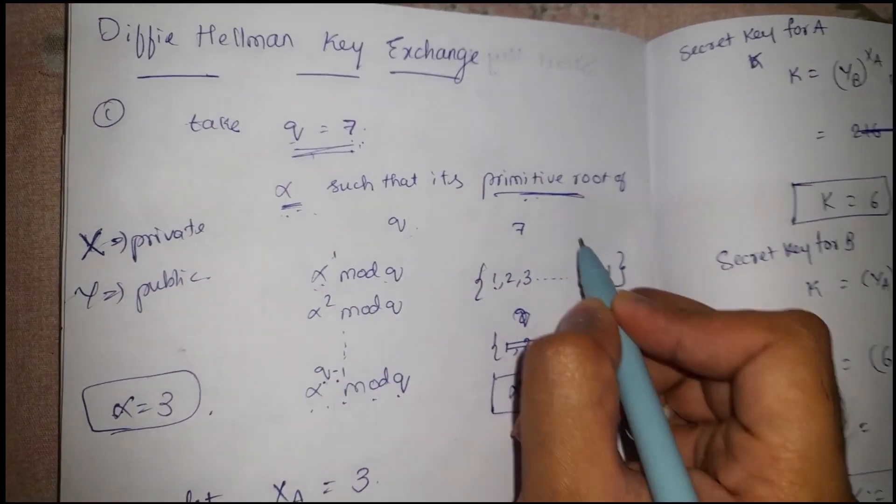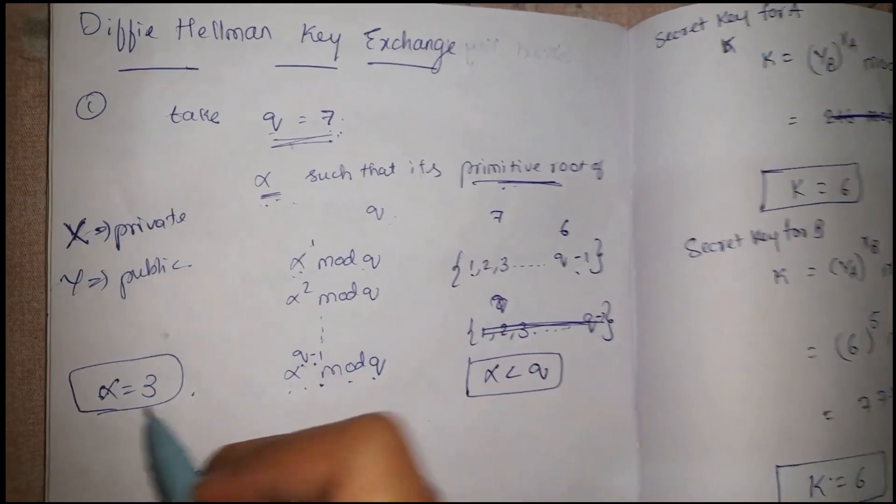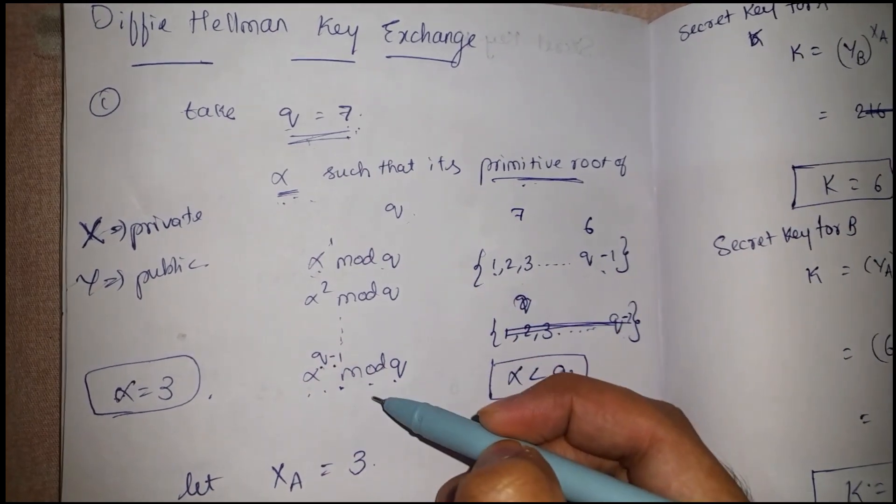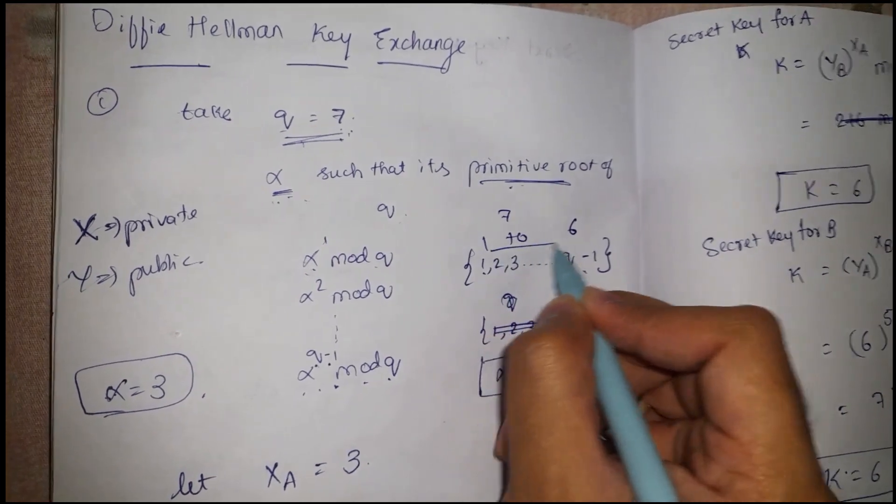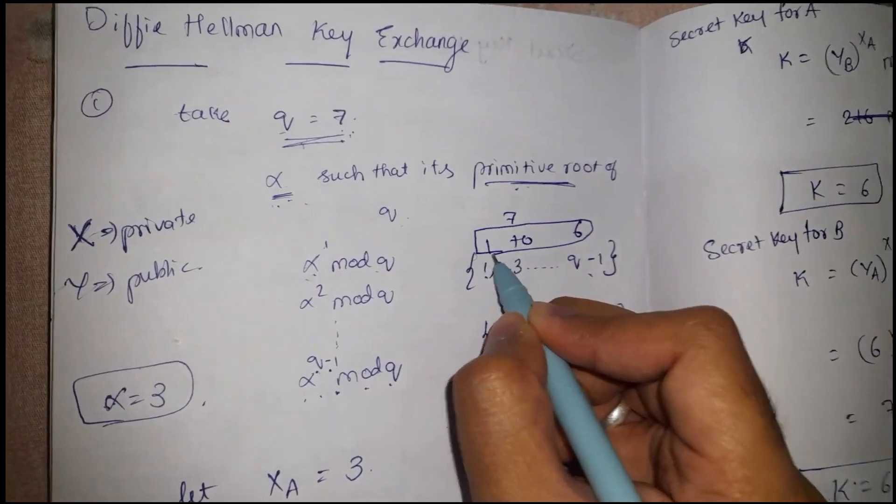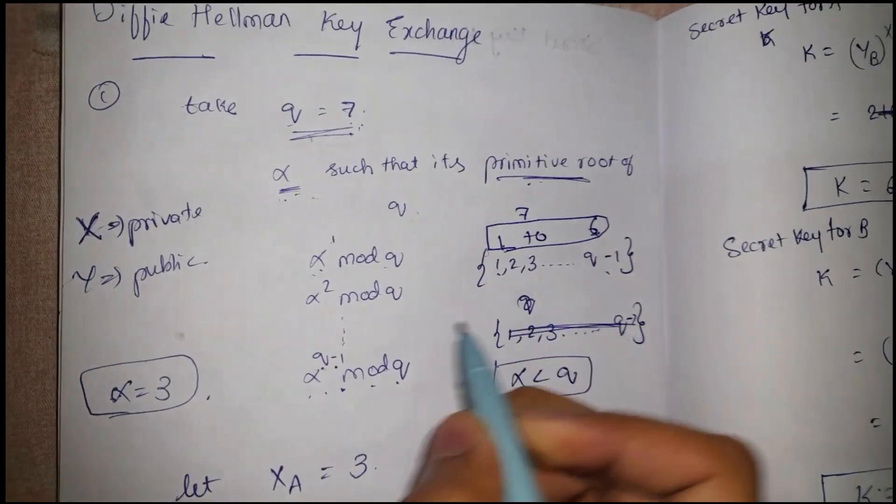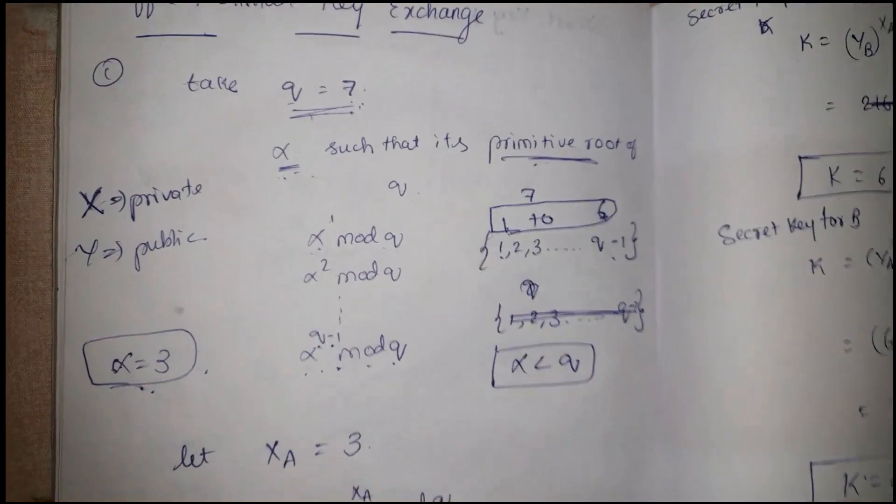Let's say I have taken q as 7, right? q-1 means 6. Now I should take an alpha value such that all these operations give a series of numbers between 1 to 6. If they are giving me a series of numbers from 1 to 6, then I can say that particular alpha is a primitive root of q. This is the condition.